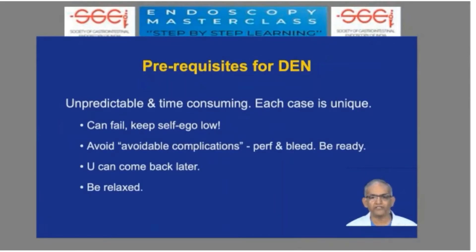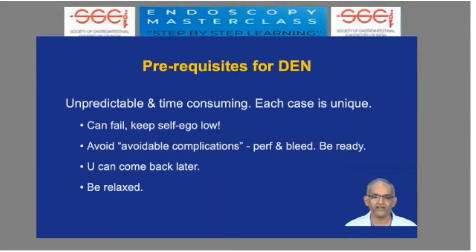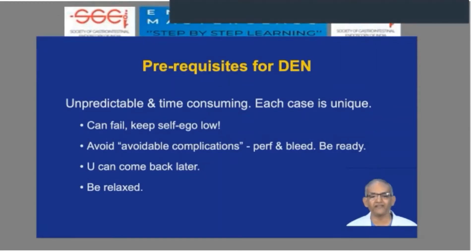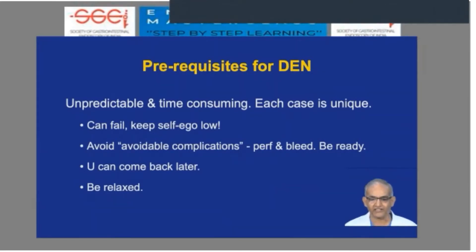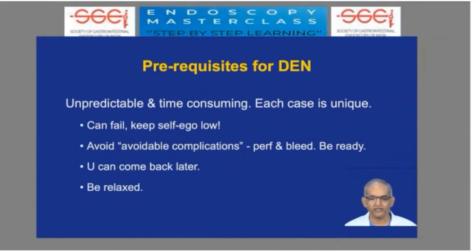There are some prerequisites for DEN. It's a very unpredictable and time-consuming procedure, and each case is unique on its own. You have to treat on merit. It can fail at times, and that's when we have to keep our egos low. We should avoid avoidable complications — it's grammatically incorrect, but a very important statement.